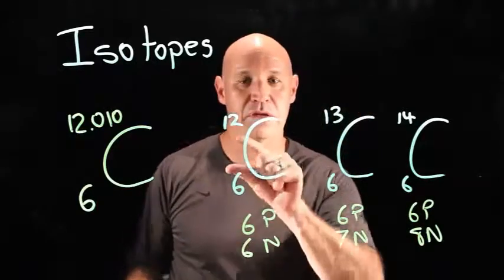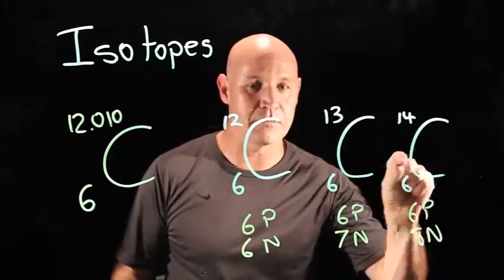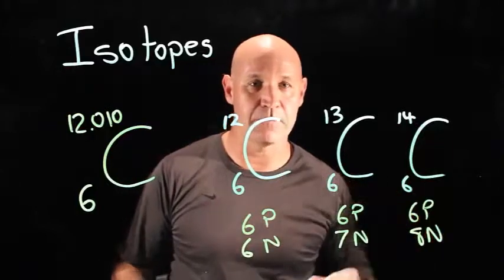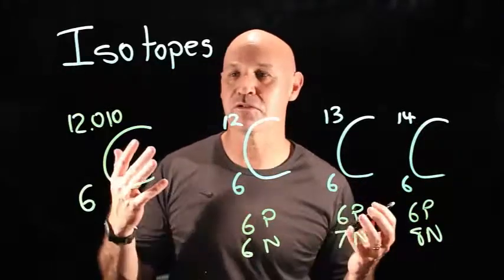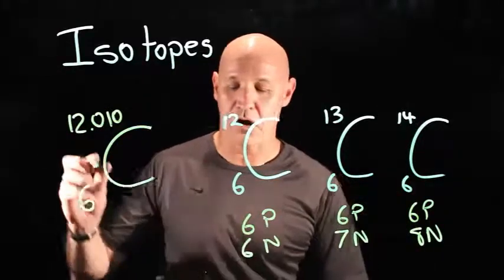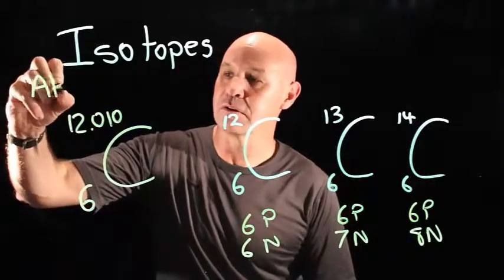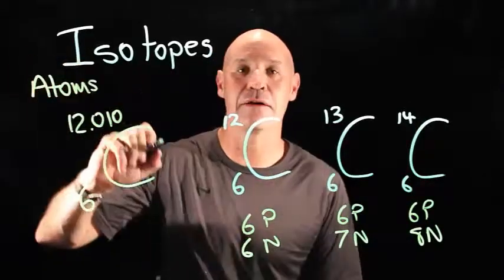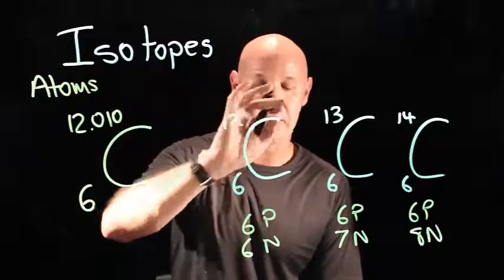So they're all carbon, but they have a variation in the number of neutrons. And that is what defines an isotope. Isotopes are atoms that have a different number of neutrons.